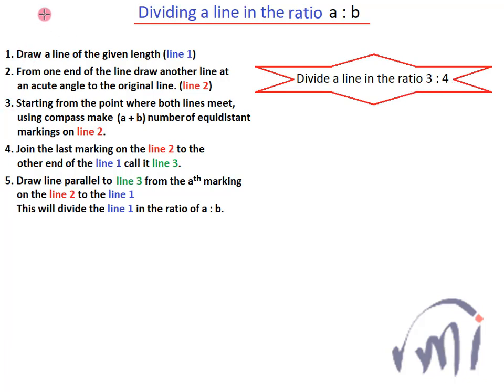Here is the generalized procedure which says draw a line of the given length, line 1. So let this blue line be the line 1 which we will divide in the ratio of 3 to 4. From one end of the line draw another line at an acute angle to the original line. Let's call it line 2.